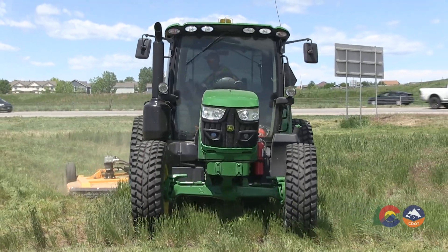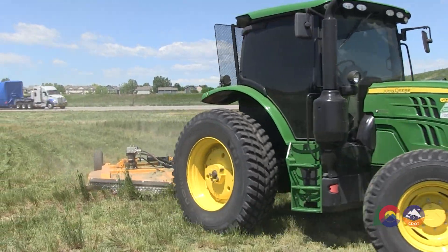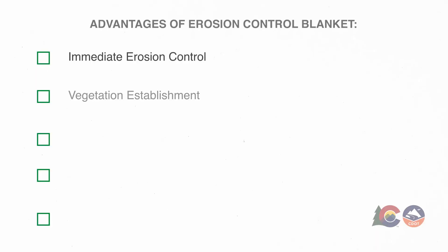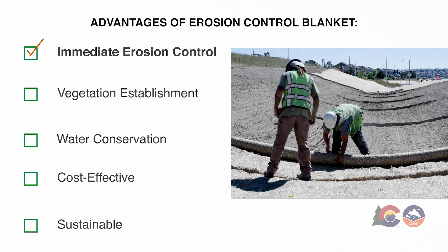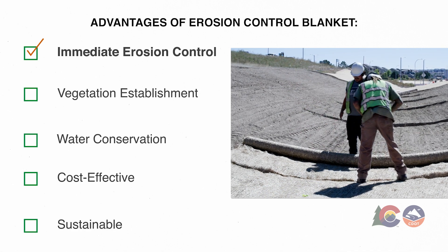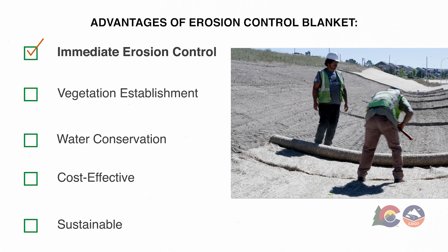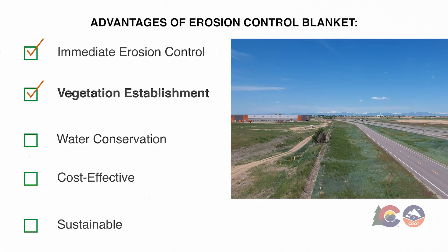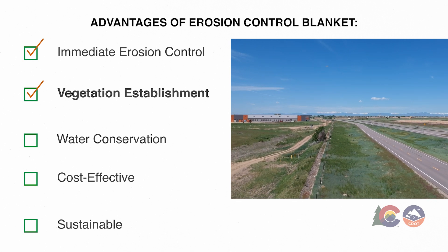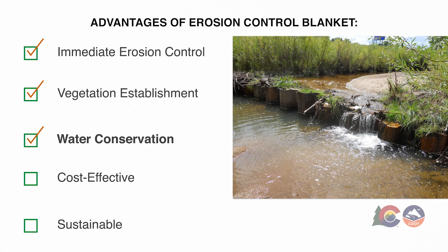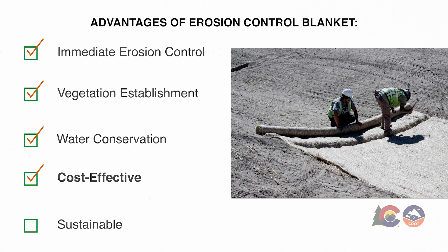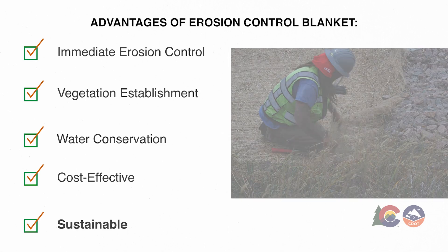Plastic netting is also a nuisance during mowing operations when it may become tangled in the blades. Advantages of erosion control blankets include: immediate erosion control — provides immediate protection from surface erosion, encourages sheet flow and discourages channelized flow, and decreases scour in channels in low volume flows. Vegetation establishment — helps soil retain moisture, improving seed germination rate and protecting newly formed plants short term to allow root systems to take hold. Water conservation — helps reduce water runoff, promotes water infiltration, reduces the need for irrigation, and improves water quality since vegetation helps filter pollutants. Cost effective — lower cost than turf reinforcement mats. Sustainable — natural materials are biodegradable.